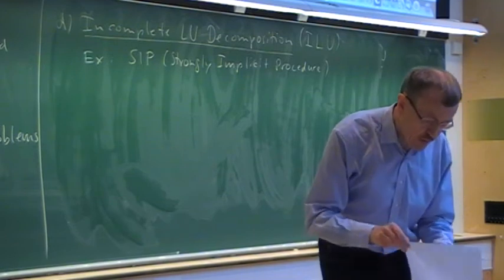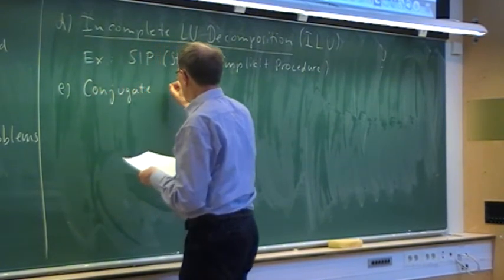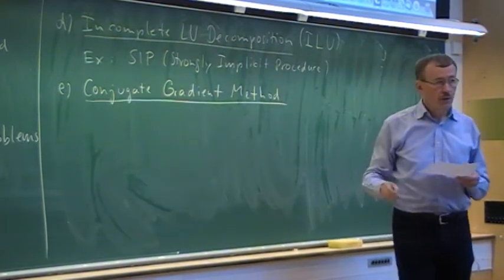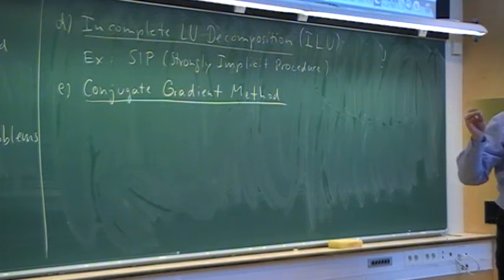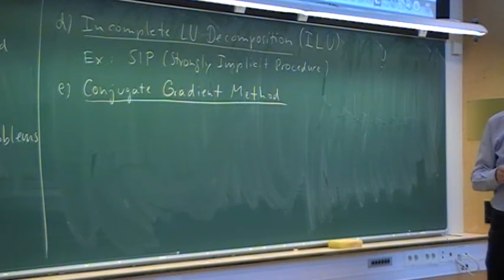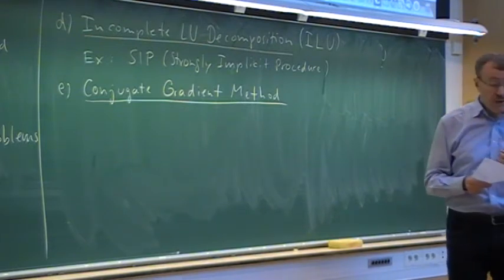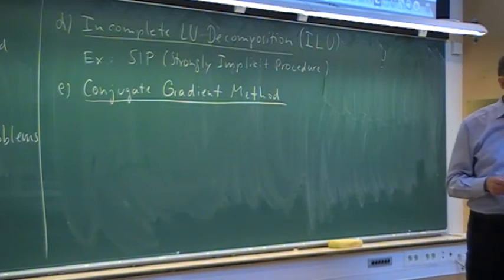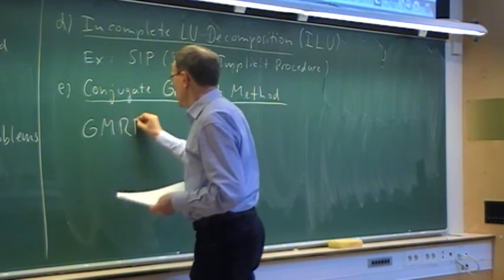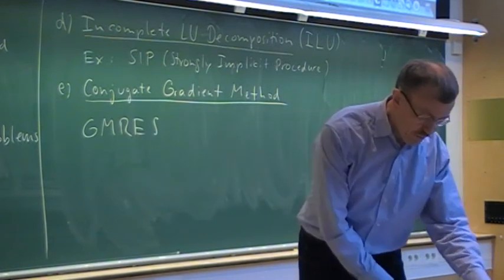A very nice method is also the conjugate gradient method. It relies on transforming the problem of solving a linear system into finding a minimum, involving matrix-vector multiplications and dot products of vectors. There is lots of preconditioning you can use with it. However, it is restricted to only symmetric and positive definite matrices. But it can be generalized, and the generalization is called GMRES — the Generalized Minimum Residual method — which does not have this restriction, though there is less theory about it.